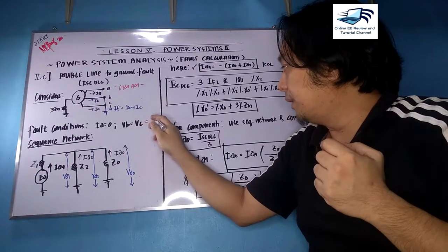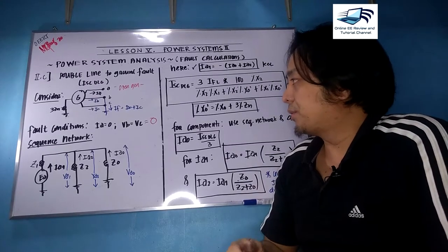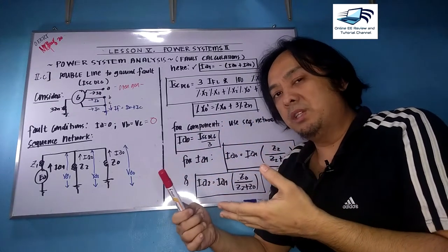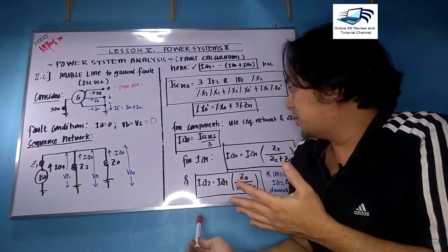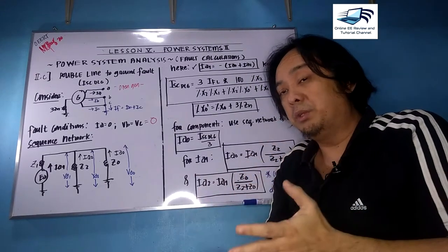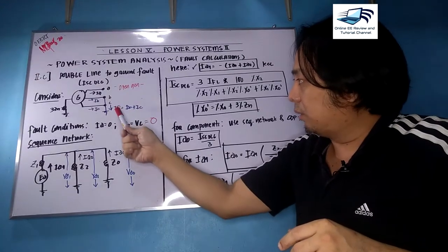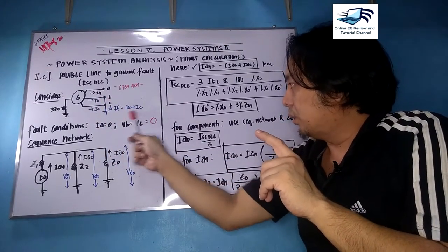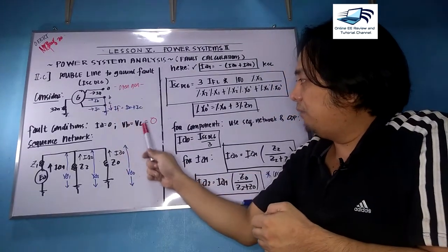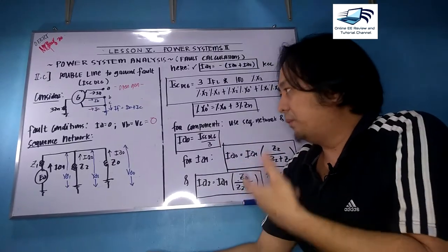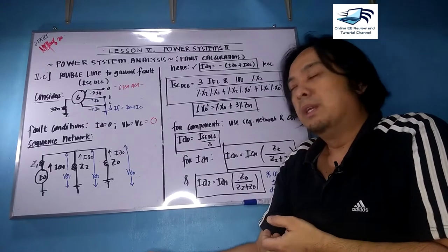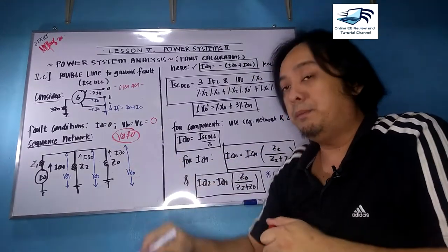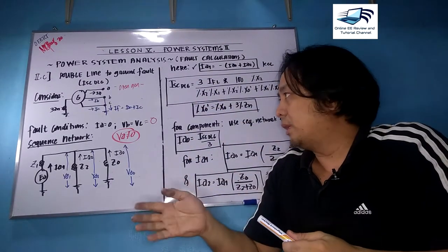With B and C grounded, VB and VC are both zero because they are parallel to a short. The fault conditions are: IB plus IC by KCL equals the fault current. VB and VC are short-circuited to ground so the zero component is now present. IA is zero because current flows to nothing. However, VA will not be equal to zero because it is an open circuit — there is still voltage.